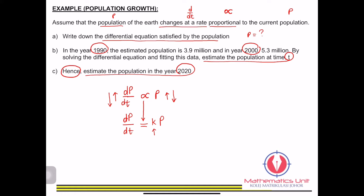We actually have two exponential problems: exponential growth and exponential decay. When it is talking about growth, our constant k would be positive. When it says decay or decreasing, our constant k would be negative. I'll show you the example of radioactive decay after this.